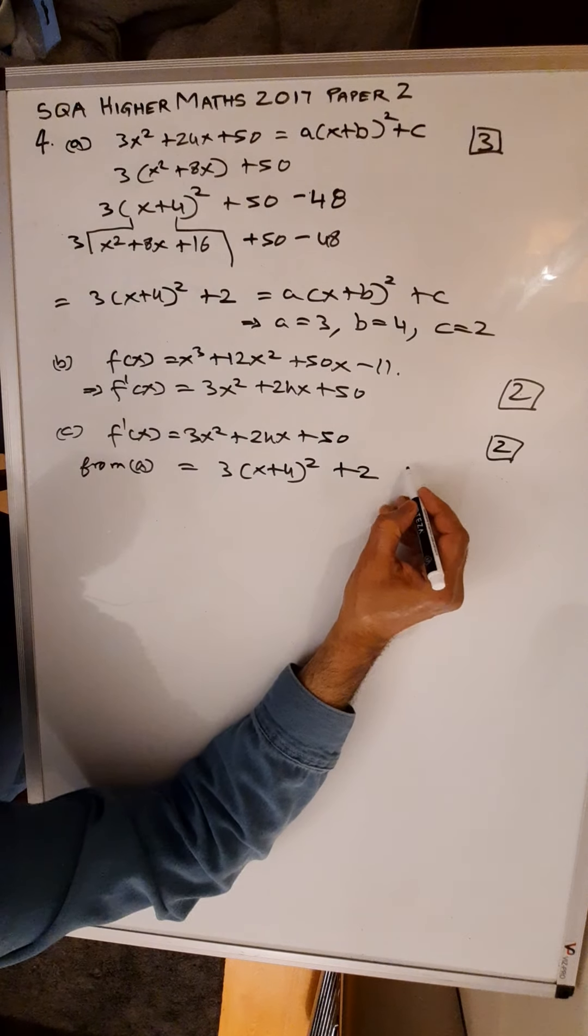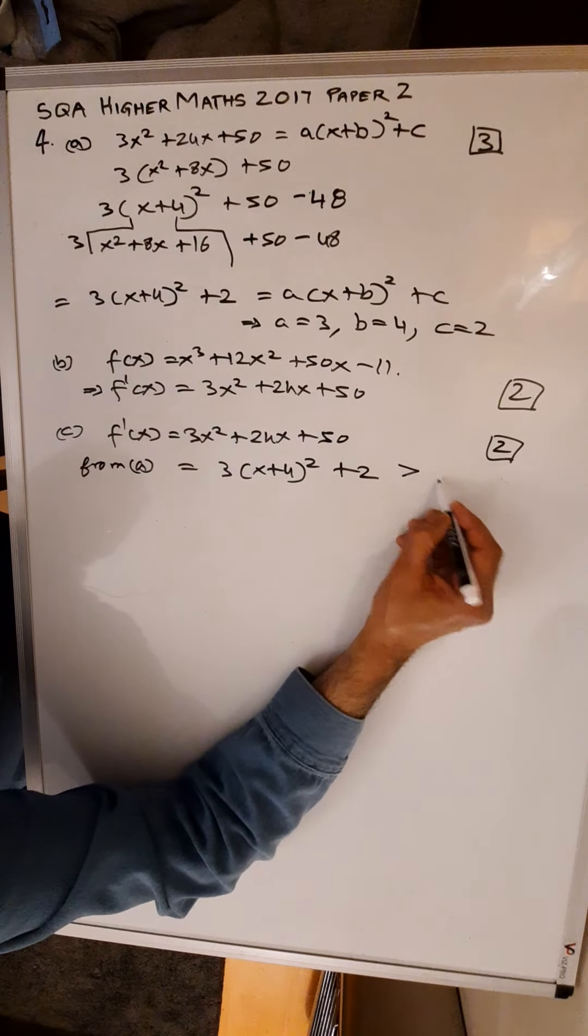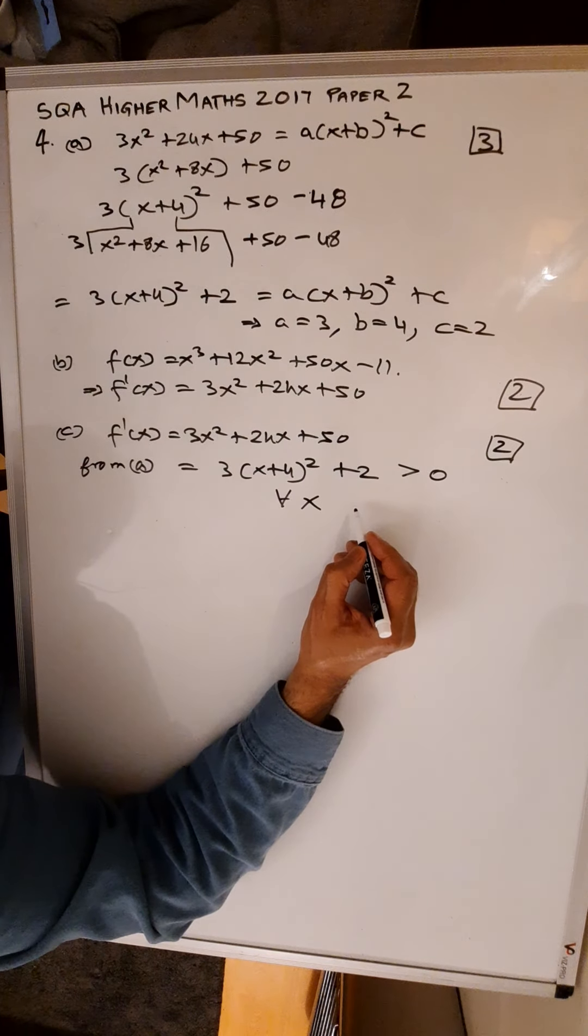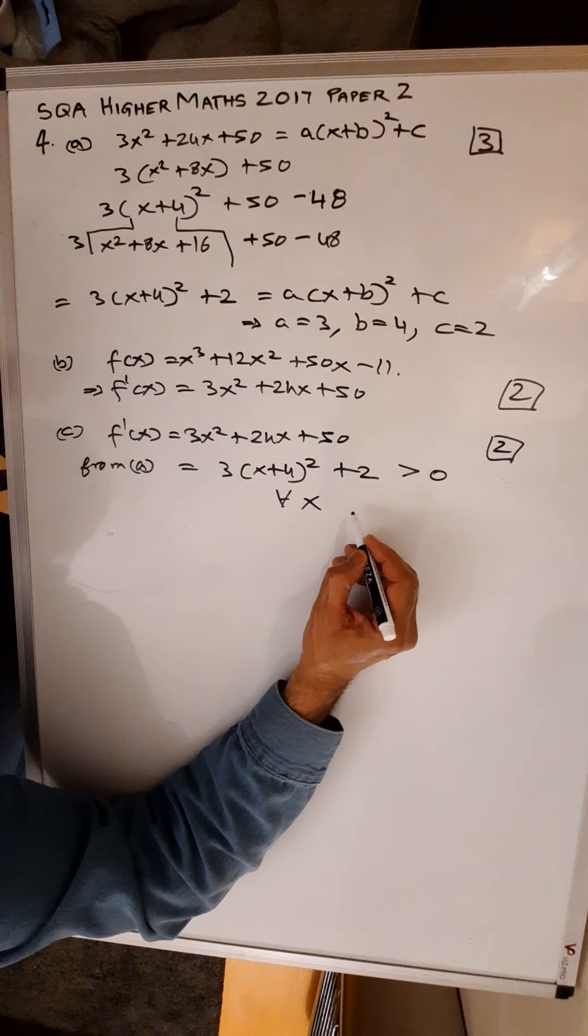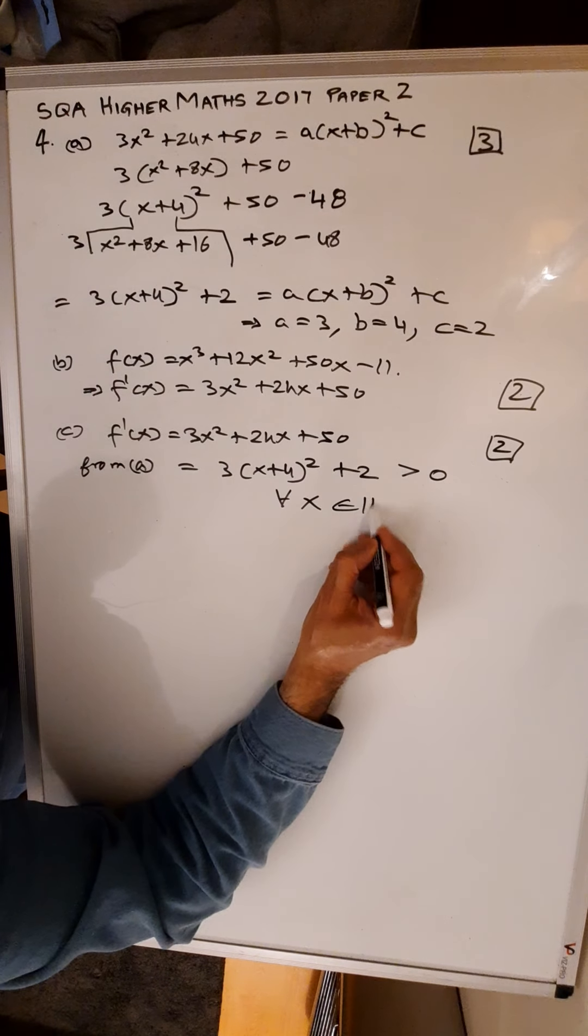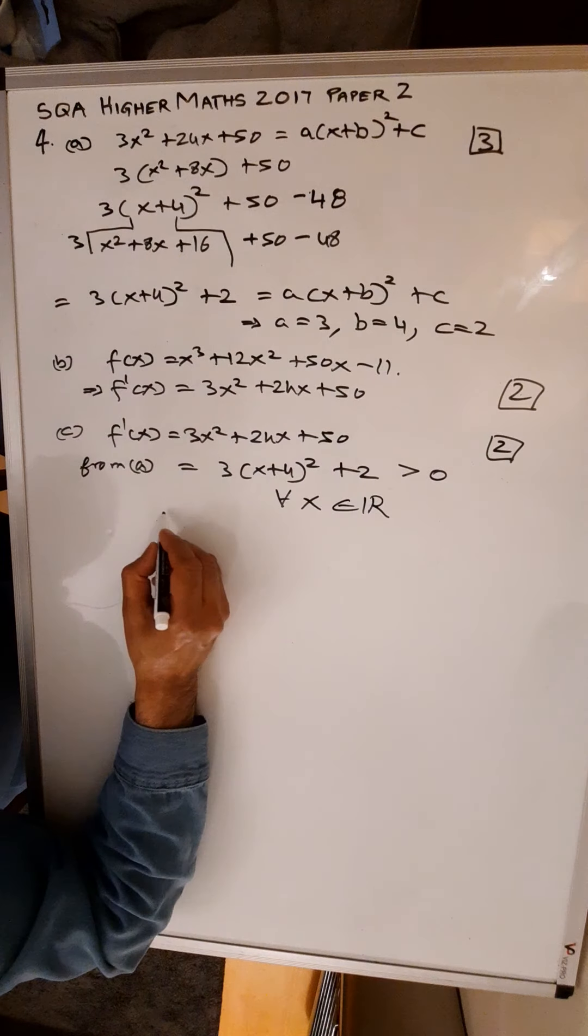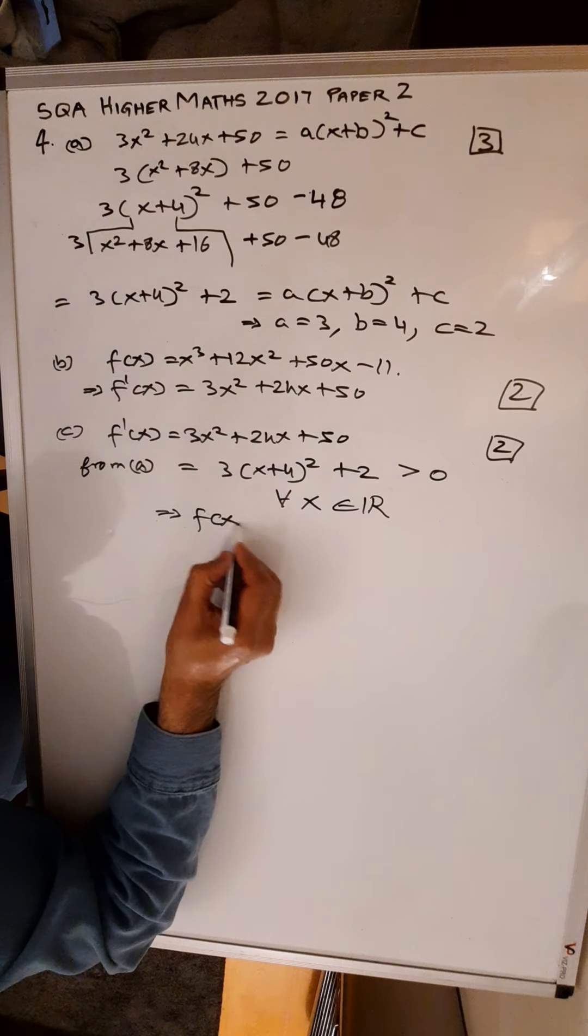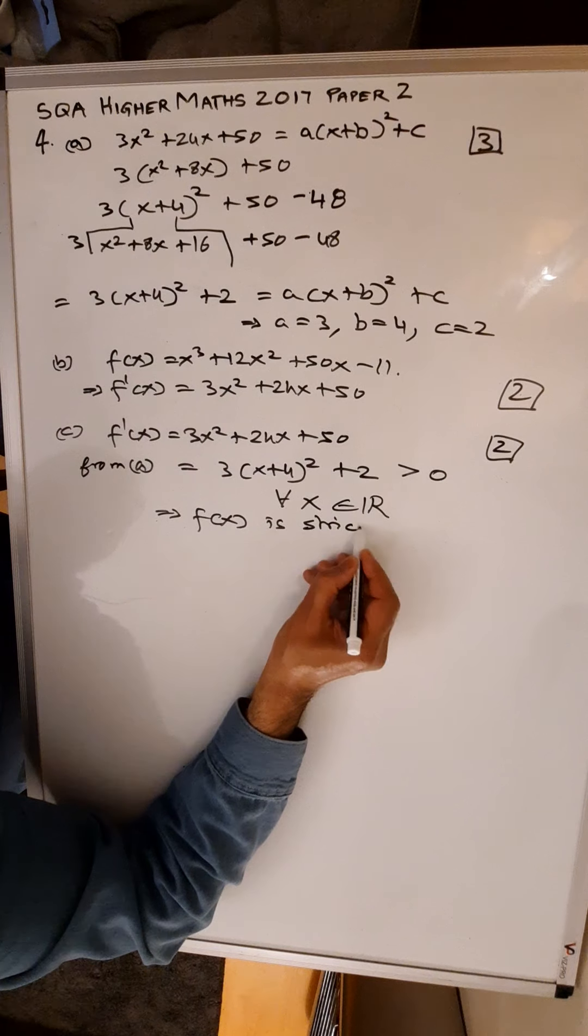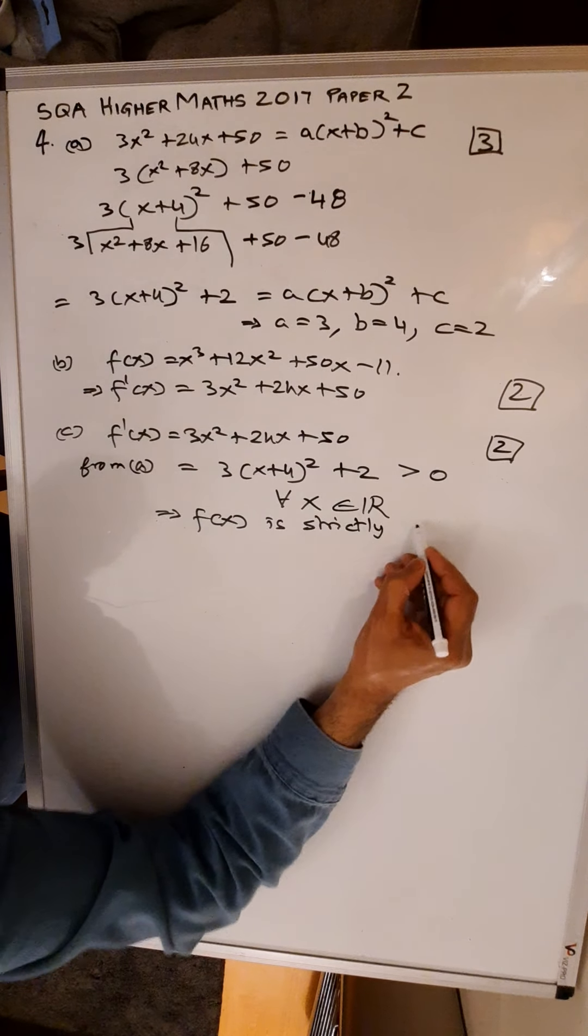And this is greater than zero for all x, for all x member of the real numbers, which means that f(x) is strictly increasing.